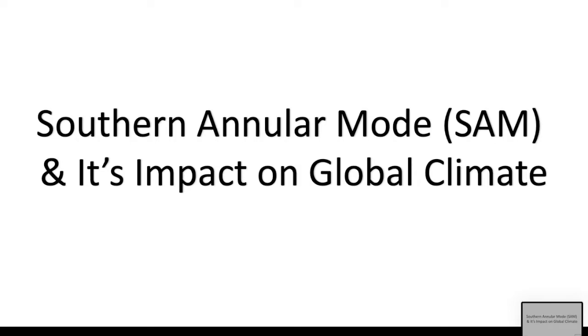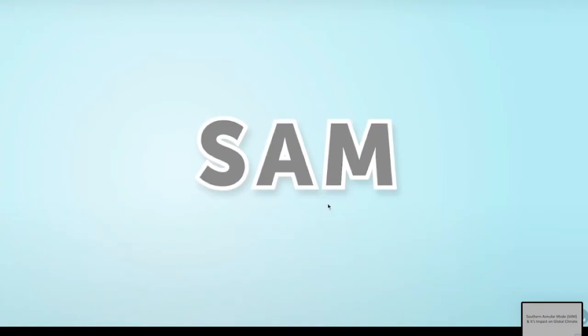So what does SAM mean? SAM is basically the Southern Annular Mode — it is in the southern hemisphere. There are different names for SAM, like Antarctic Oscillation and Southern Oscillation. All three names are the same. We'll start with the animation first, then we'll go into detail.